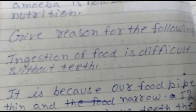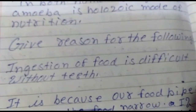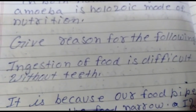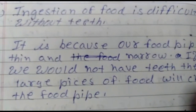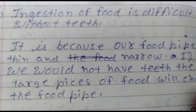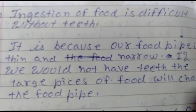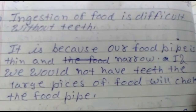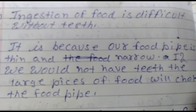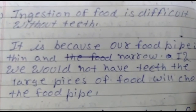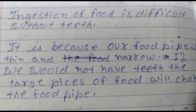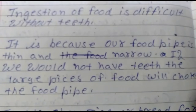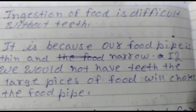Give reasons for the following: ingestion of food is difficult without teeth. It is because our food pipe is thin and narrow. If we did not have teeth, large pieces of food would choke the food pipe. Our food pipe, the oesophagus, is very thin and narrow, and if we do not chew food properly, large pieces will choke the oesophagus.